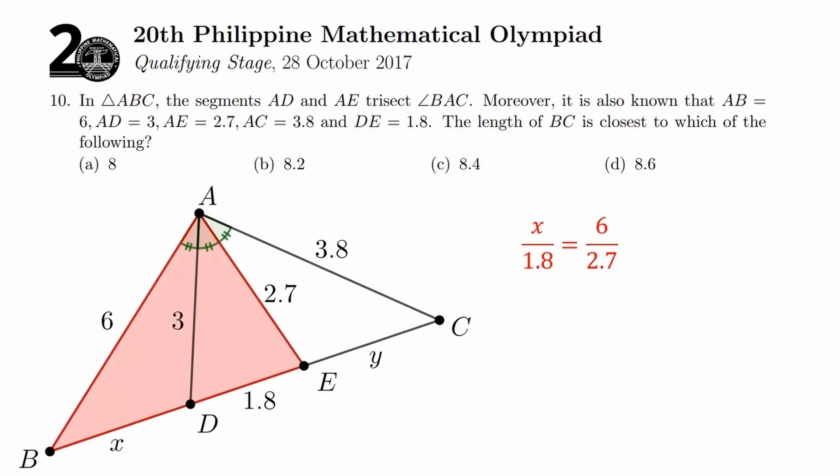In the proportion, that can be expressed in many different ways. If you want to write X over 6 equals 1.8 over 2.7, of course, it's going to mean the same thing. Now, consequently, X equals 4.